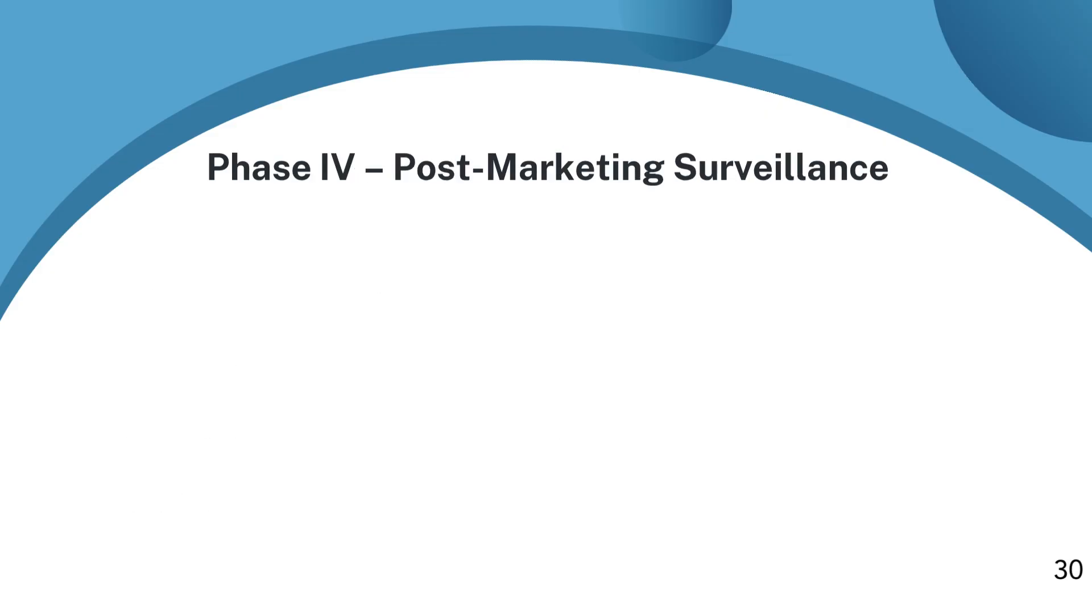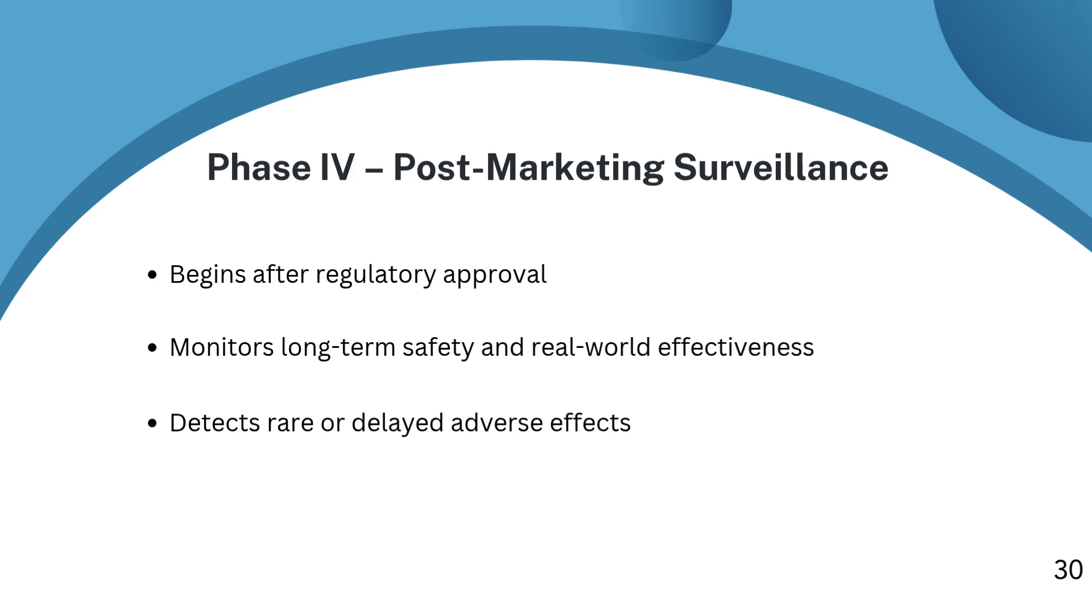Phase four: what happens after approval? Even after a drug is approved and launched, the work continues. This is where phase four, or post-marketing surveillance, begins. In phase four, the drug is out in the real world, being used by many more patients, sometimes in ways that weren't fully captured during trials. That's why we need ongoing monitoring. It helps us catch rare side effects, see how the drug works in special populations, and gather more data on long-term safety. It's also a time for generating real-world evidence, exploring outcomes in different settings, and even running additional studies to support new indications or regulatory commitments. This stage reflects a shared responsibility between pharmaceutical companies, regulators, healthcare providers, and patients to make sure that the benefits of the drug continue to outweigh the risks.